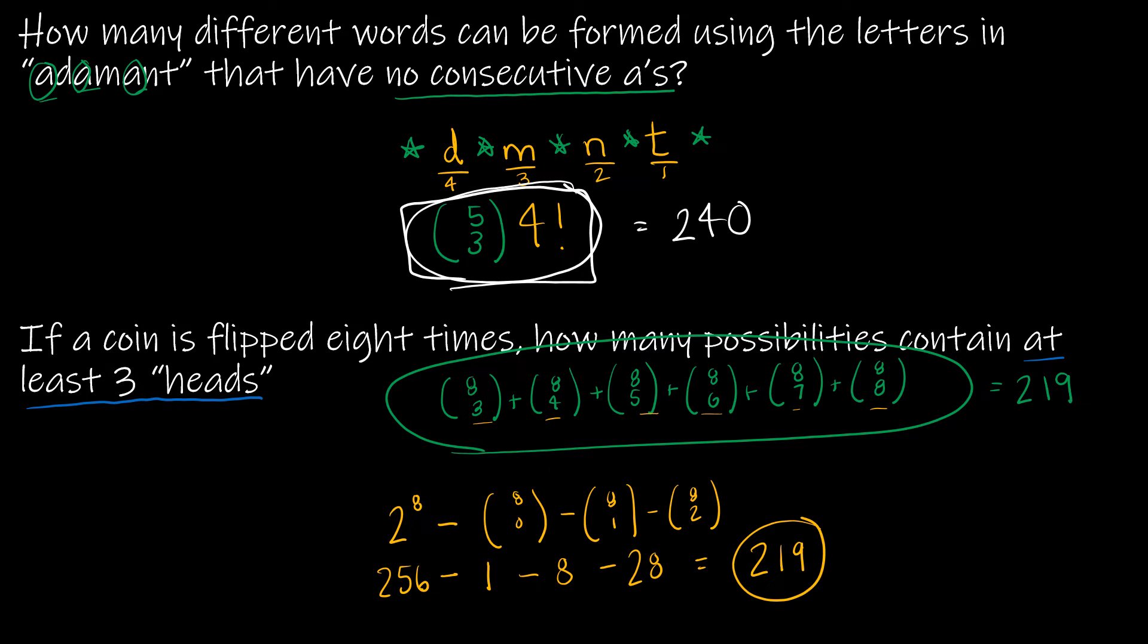So 256 minus all of that gives me 219, which is the correct solution. So if you'll notice, we get the same solution either way. And both of them are perfectly acceptable ways to find the answer.